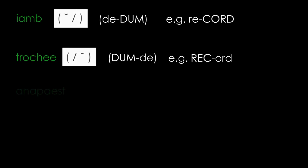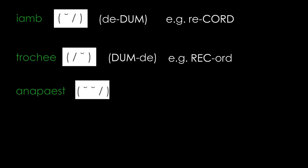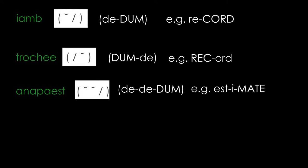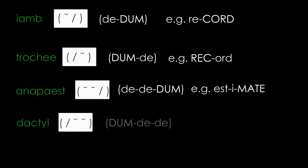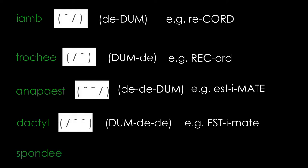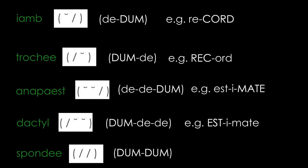An anapest is a three-syllable metric foot which has two unstressed syllables followed by a stressed syllable — di-di-dum. The verb 'estimate' is an anapest. A dactyl is a three-syllable metric foot which has one stressed syllable followed by two unstressed syllables — dum-di-di. The noun 'estimate' is a dactyl. A spondee is a two-syllable metric foot which has two stressed syllables — dum-dum.